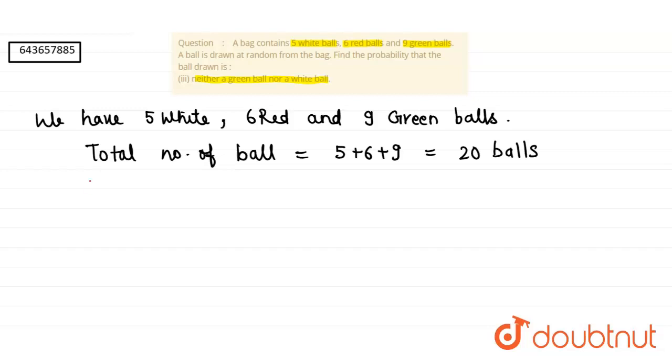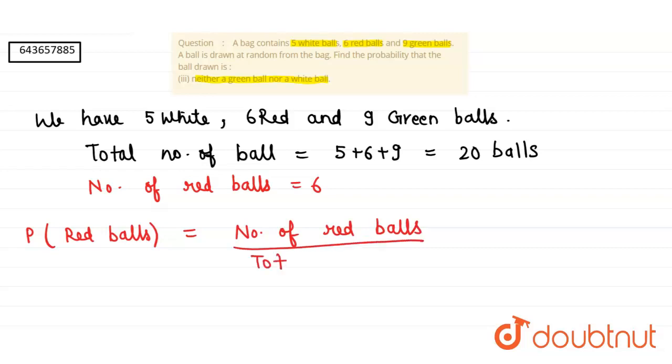So number of red balls is 6. Therefore, probability of red balls will be number of red balls divided by total number of balls.